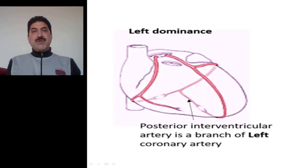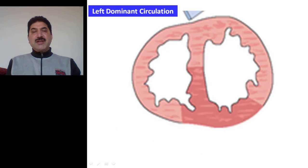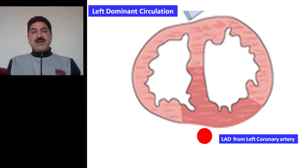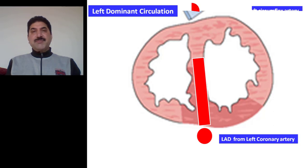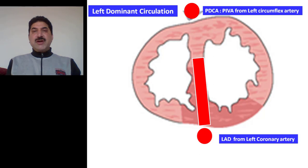Now let us go to the left dominant coronary circulation. In case of left dominant coronary circulation, the posterior descending coronary artery, or posterior interventricular coronary artery, is given by the left circumflex coronary artery. From the left anterior descending coronary artery, septal branches arise and supply the anterior two thirds of the septum. The posterior descending coronary artery, also arising from the left circumflex coronary artery, supplies the posterior one third of the septum.